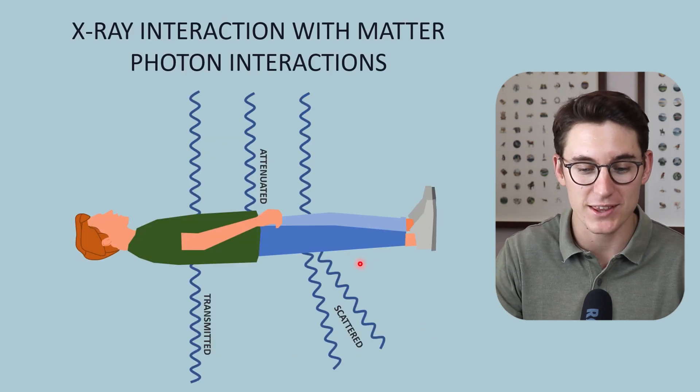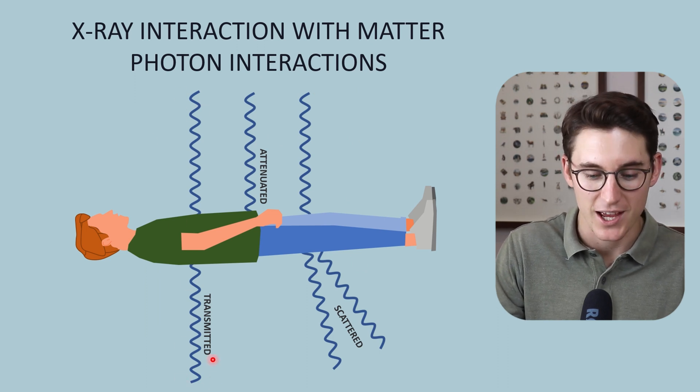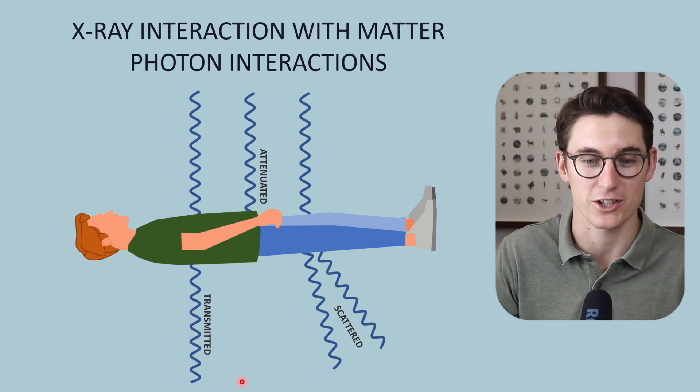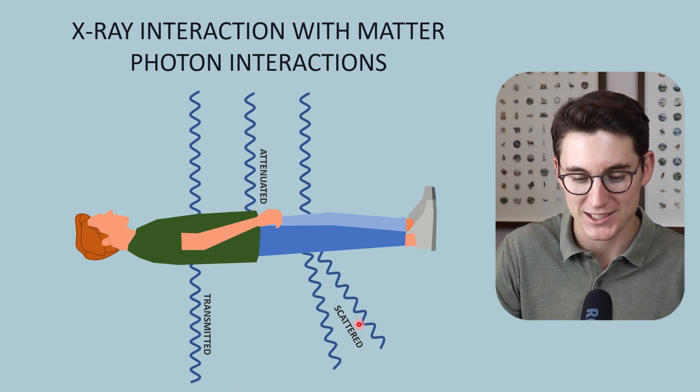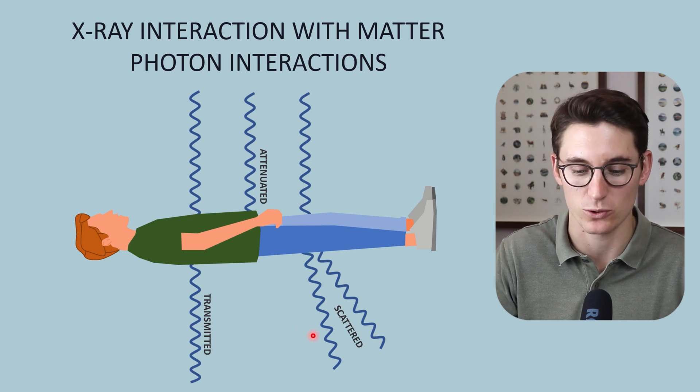There are three things that can happen with our incident x-rays. They can be transmitted and reach our x-ray detector. They can be attenuated and cast a shadow on our detector, or they can be scattered. Primarily, they're scattered through the Compton effect.